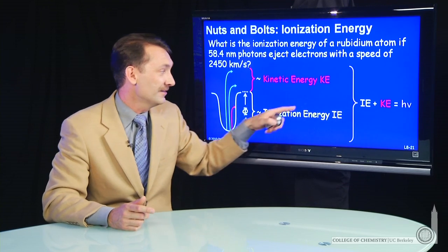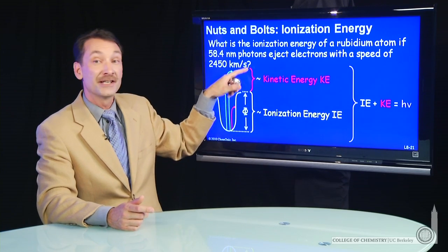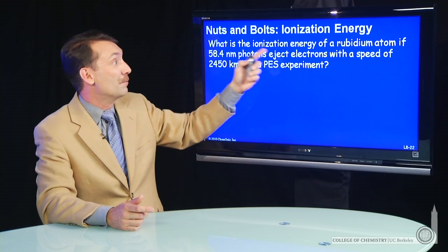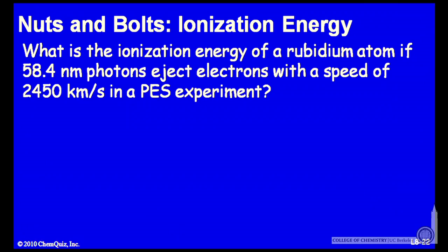So the photon is split into two things: ionizing plus kinetic energy. So let's actually calculate this for rubidium atoms that are under ultraviolet radiation at 58.4 nanometers, and they're ejecting electrons at 2450 kilometers per second.